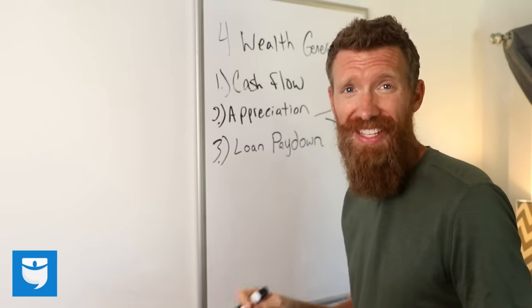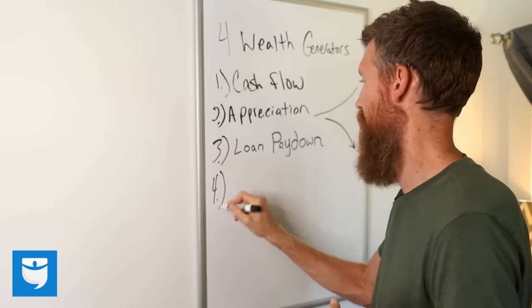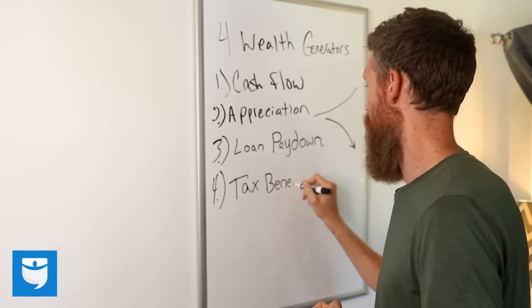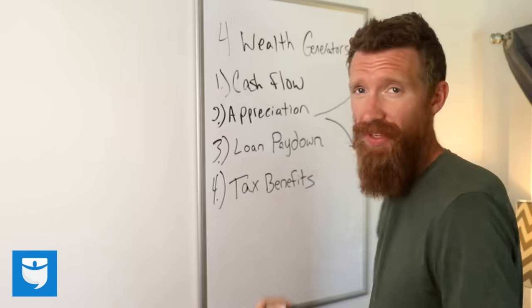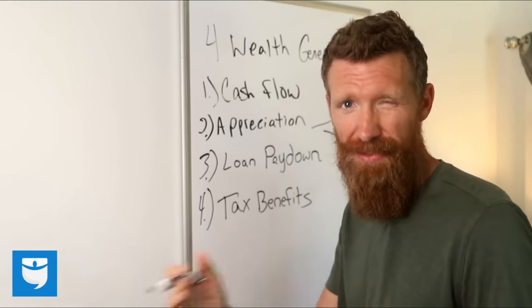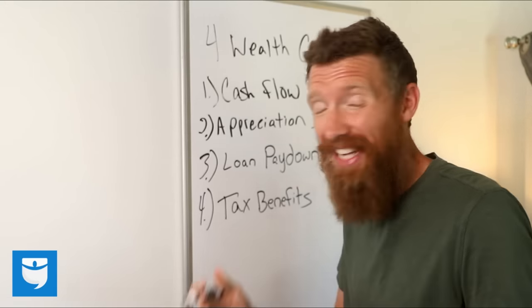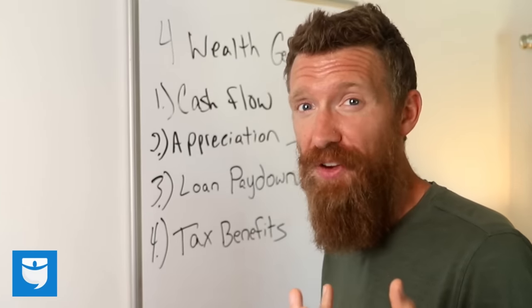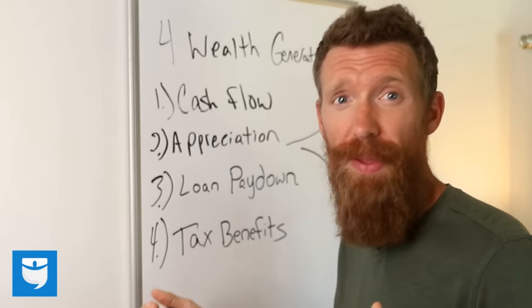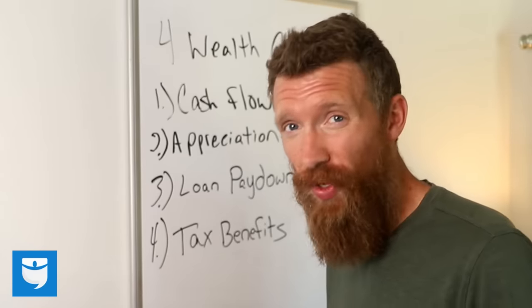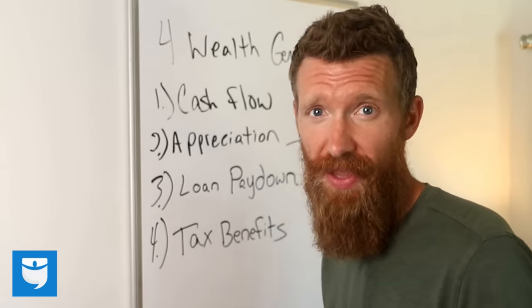And number four, the fourth wealth generator, tax benefits. Okay. So for the purpose of this video, we're not going to talk a lot about tax benefits, but in real life, man, the tax benefits are huge. Like if you made a hundred grand from real estate and your friend made a hundred grand from a job or maybe a business they own, who do you think would end up keeping more money? You would with real estate, way more money than your friend.